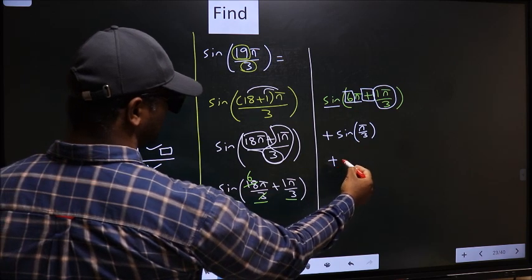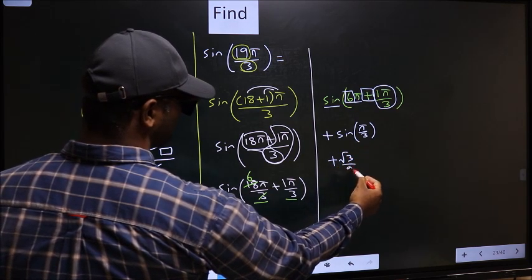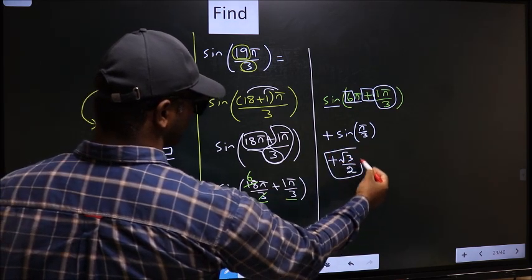So we get plus sin π by 3 is √3 by 2. So this is our answer. Let's go ahead.